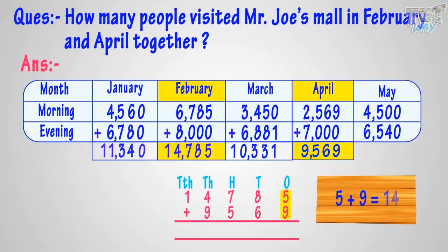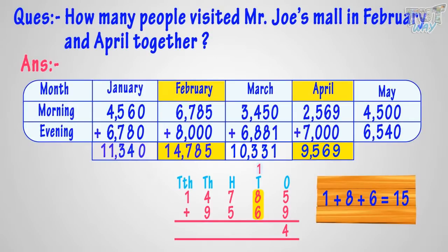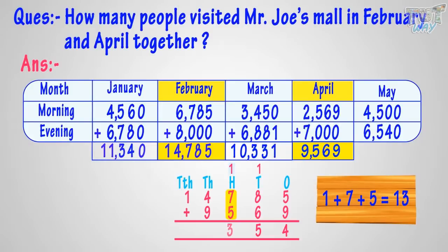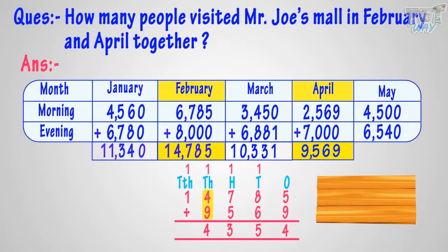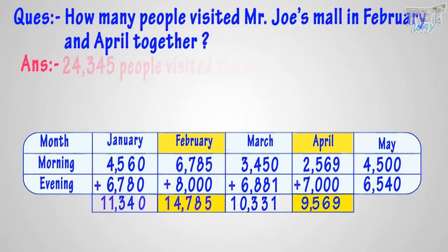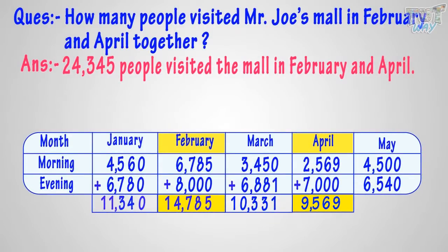Adding 5 and 9, we get 14. Write 4 at the 1's place in the sum and carry over 1 to the 10's place. Adding 1 plus 8 plus 6, we get 15. Write 5 at the 10's place and carry over 1 to the 100's place. Adding 1 plus 7 plus 5 equals 13. Write 3 at the 100's place and carry over 1 to the 1000's place. Adding 1 plus 4 plus 9, we get 14. Write 4 at the 1000's place and carry over 1. Adding 1 and 1, we get 2. We got 24,354 people who visited the mall in February and April.